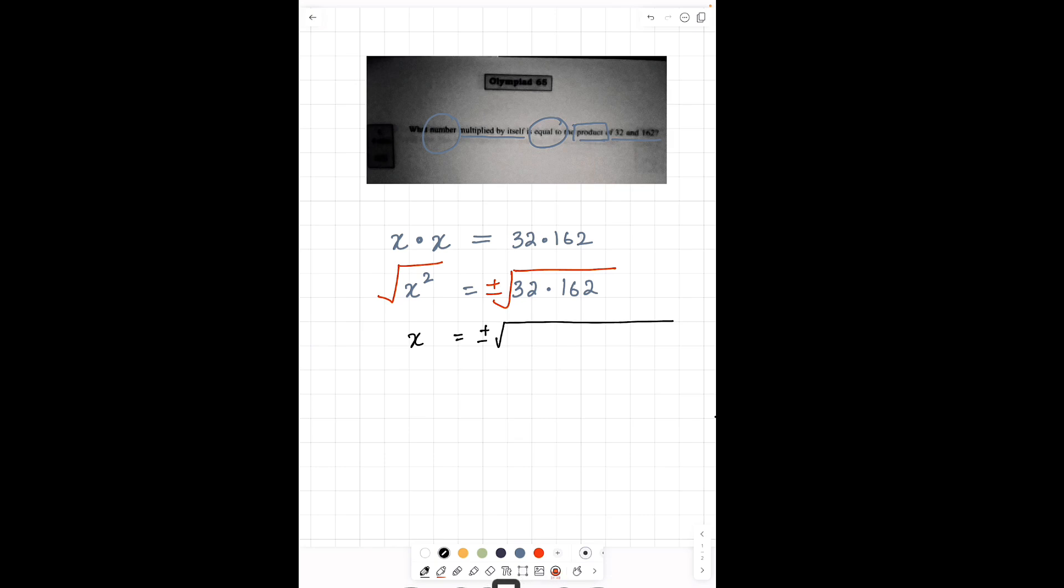Now once we find, write down 32 and 162, let's break it down into its prime factors. So 32 is 2 multiplied by itself 5 times and 162 is 2 times 9 times 9.